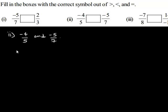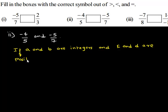It says if A and B are integers and C and D are positive integers, then: